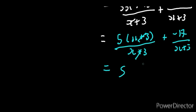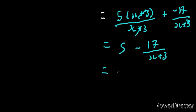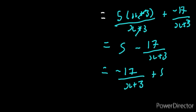This is supposed to be 3 — it was not visible. So if I rearrange it, I already have the standard form: negative 17 over x plus 3 plus 5. And then we have it — written in the form that was required.